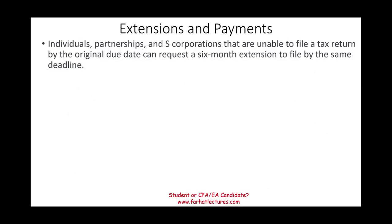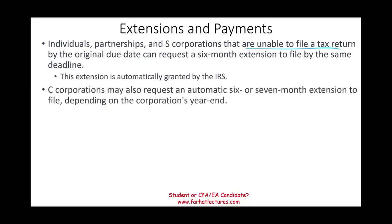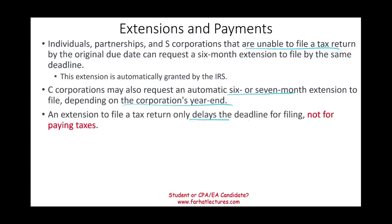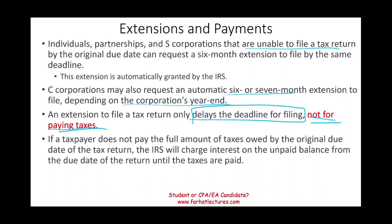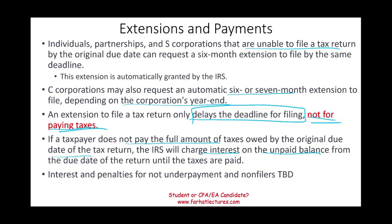Individual, partnership, and S corporation who are unable to file on time can file an extension — it's automatically granted once received, you don't have to wait for permission. C corporations can also request an automatic extension of six or seven months depending on the corporate year end. An extension to file a return only delays the deadline for filing — it doesn't delay the payment of taxes. You still have to pay the tax; it just gives you more time to put your paperwork together. If the taxpayer does not pay the full amount of taxes owed by the original due date, they will have to pay interest on the unpaid balance from the due date until the taxes are paid. There are also interest and penalties for underpayment and non-filers, which will be discussed in a separate session.